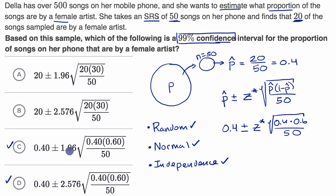The main thing we have to reason through is which one has a correct critical value. Do we want to go 1.96 standard errors or 2.576 standard errors above and below our sample proportion? The key is the 99% confidence level.